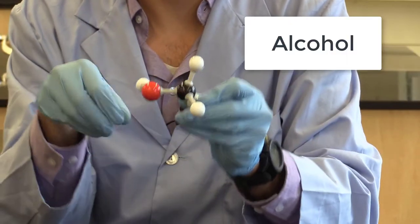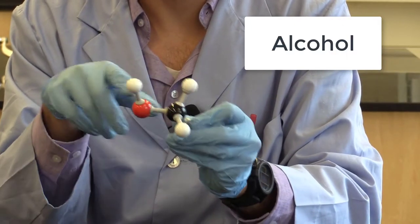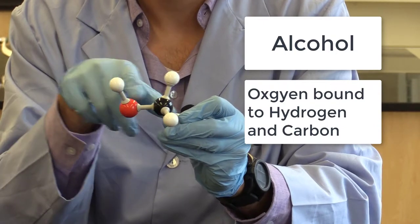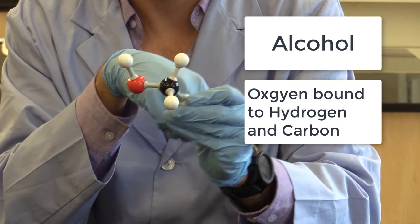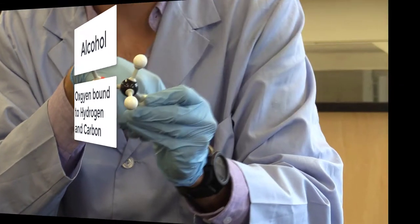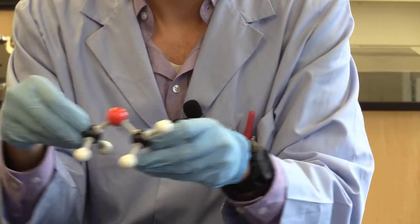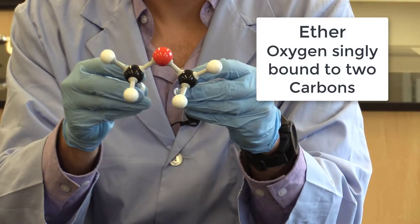Next is our alcohol. So you have an oxygen bonded to a hydrogen and then it's bonded to our carbon. This is ether. So it's an oxygen bonded to a carbon on either side of it.